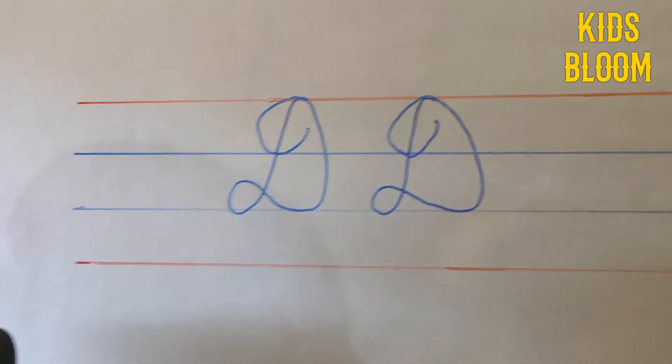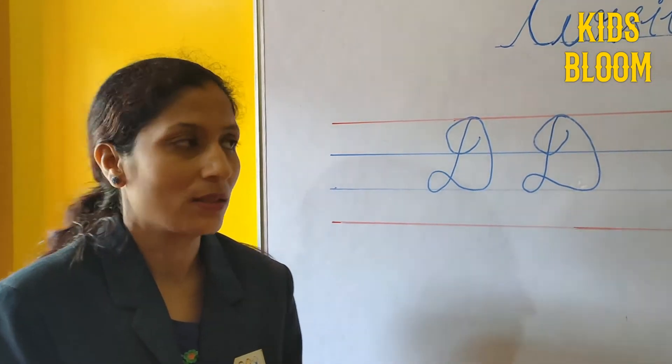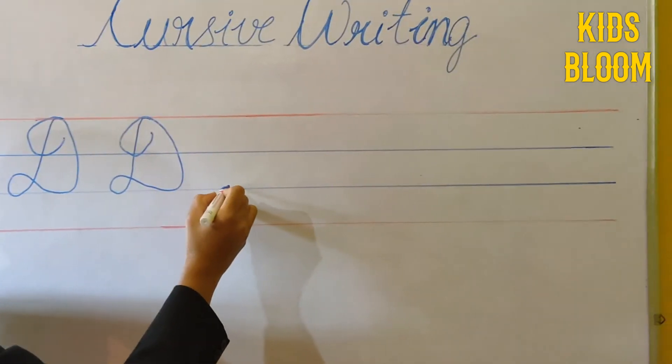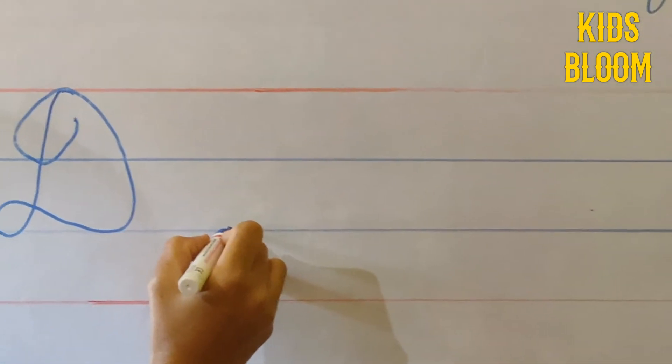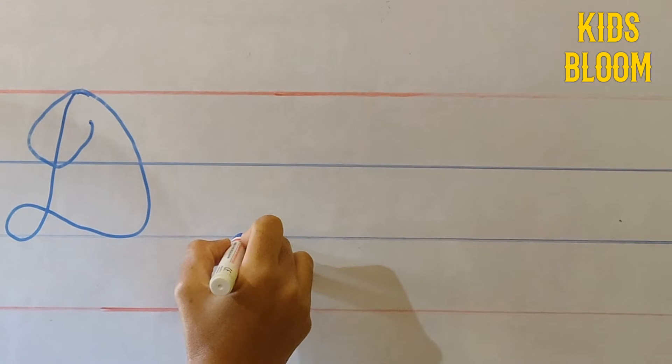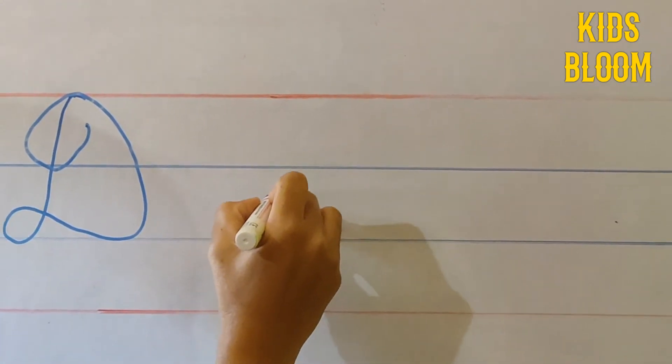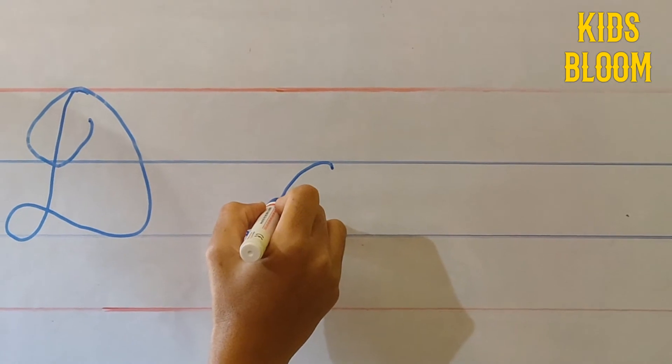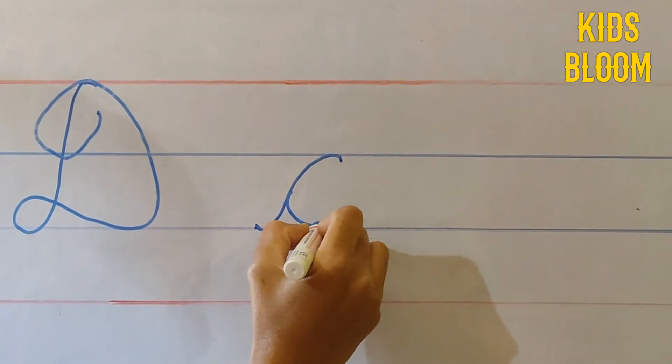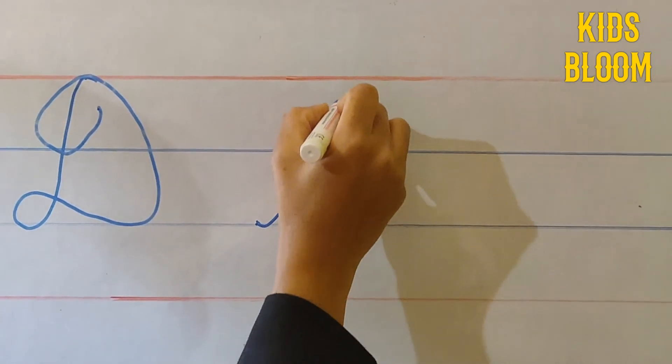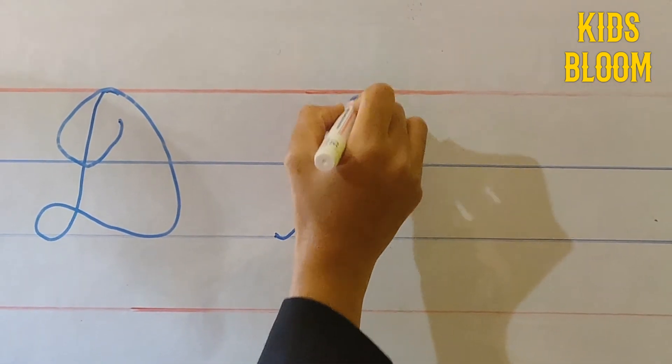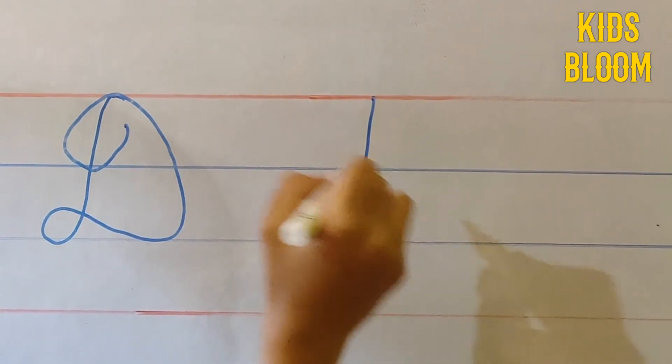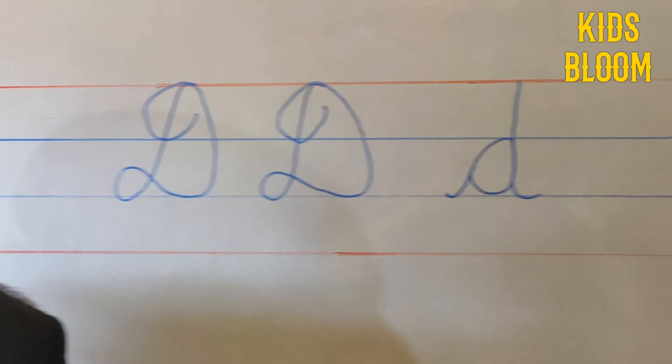Now I am going to show you how to write the small cursive D. First keep your pencil on the third line, touch the second line like this, remove your pencil, again make a curve, touch this curve to the third line and again make a curve like this. This is our cursive D.